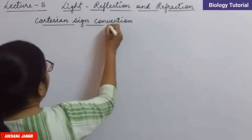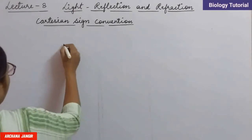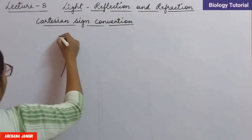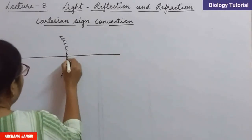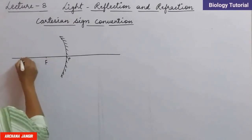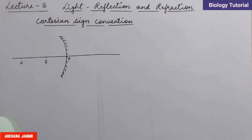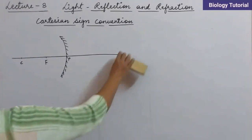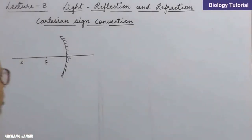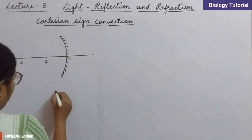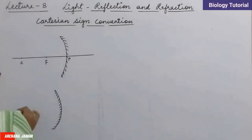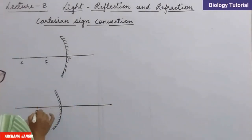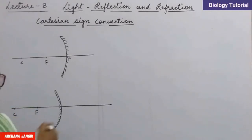For this we have to draw the mirror. This is the concave mirror. Here is the principal axis and here is P, this is the focus and here is the center of curvature. This is the convex mirror — in case of convex mirror, the polish is on this side. Here is the focus and here is the center of curvature. This is the pole.